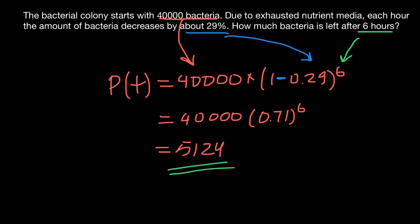And of course, you should understand that we are not necessarily going to have 5124 bacteria. This number is just an approximation. So we have to show that this is just an approximation.